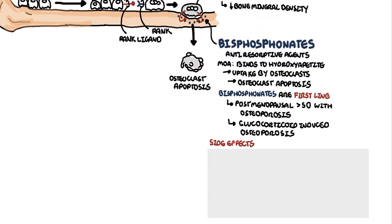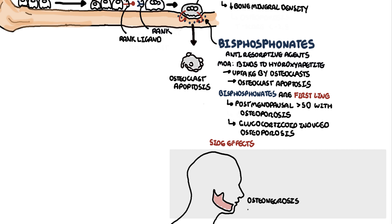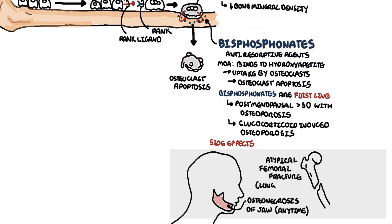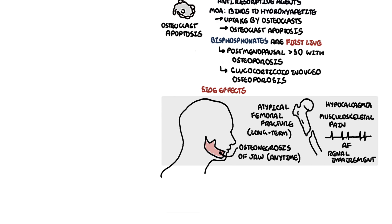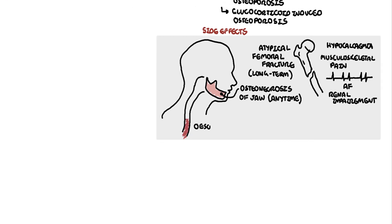The side effects of bisphosphonates include osteonecrosis of the jaw, which can happen at any time, and atypical femoral fractures associated with longer duration of use. Other side effects include hypocalcemia and hypophosphatemia, musculoskeletal pain, atrial fibrillation, and renal impairment. Oral bisphosphonates specifically can cause esophageal inflammation, as well as ocular inflammation and visual disturbances.